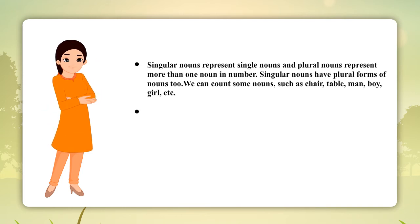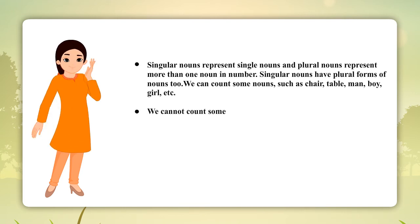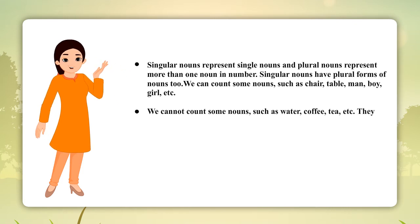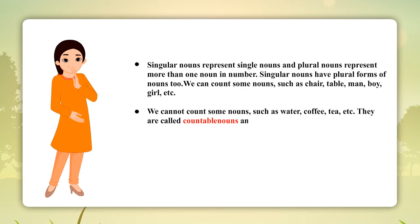We cannot count some nouns such as water, coffee, tea, etc. They are called countable nouns and uncountable nouns respectively.